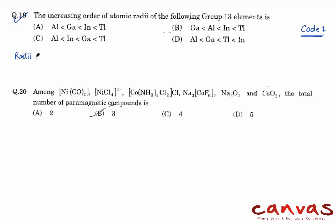If you take the values of the radii for aluminium, gallium, indium, and thallium: for aluminium the atomic radii is 143 picometer, for gallium it is around 135-136, indium is 167, and thallium is 170. We can clearly see that the smallest one is gallium.